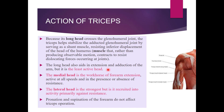The long head aids in extension and adduction of the arm but is the least active head. The medial head is the workhorse of forearm extension — active at all speeds and in the presence or absence of resistance. The lateral head is the strongest but is recruited primarily against resistance. Pronation and supination of the forearm do not affect triceps operation.